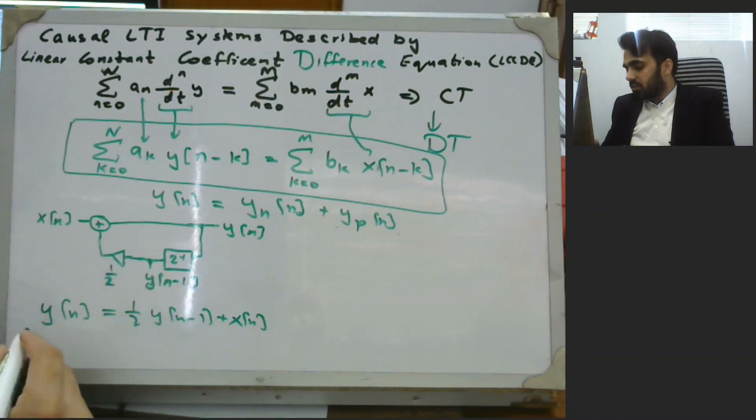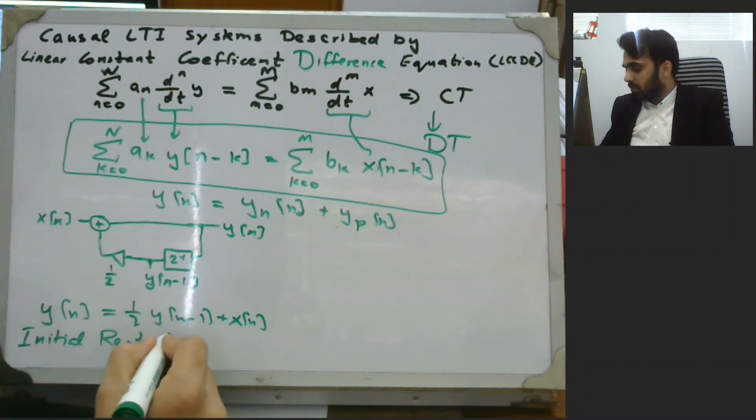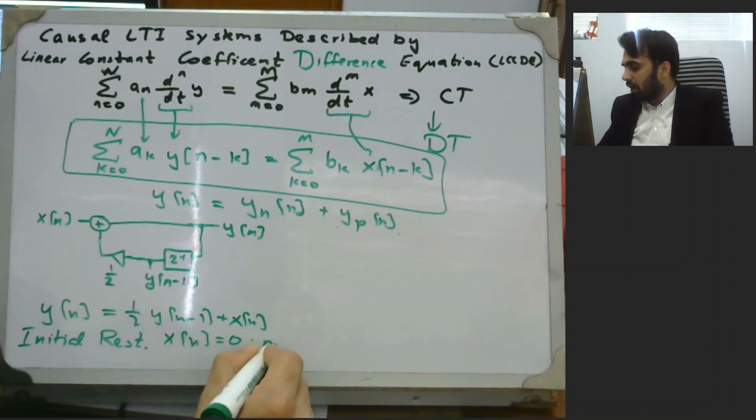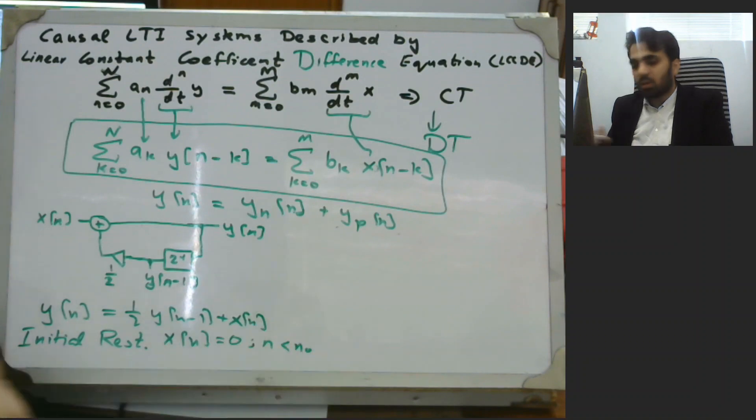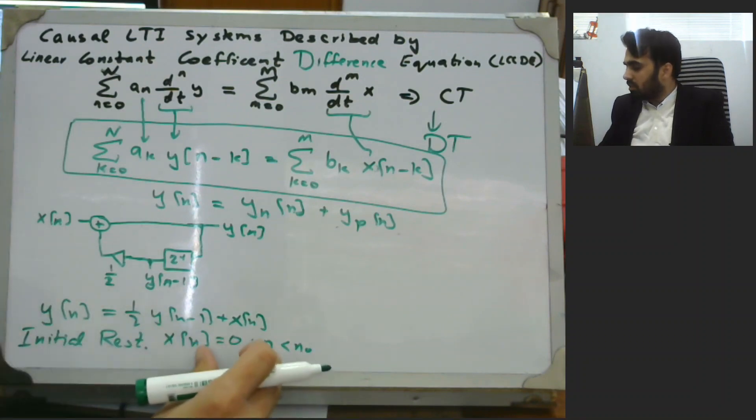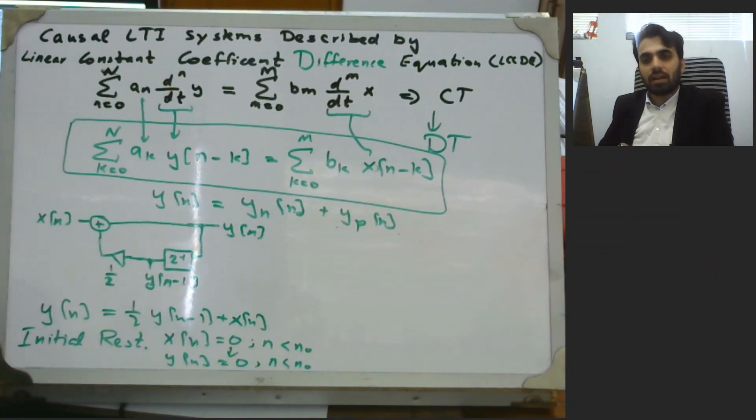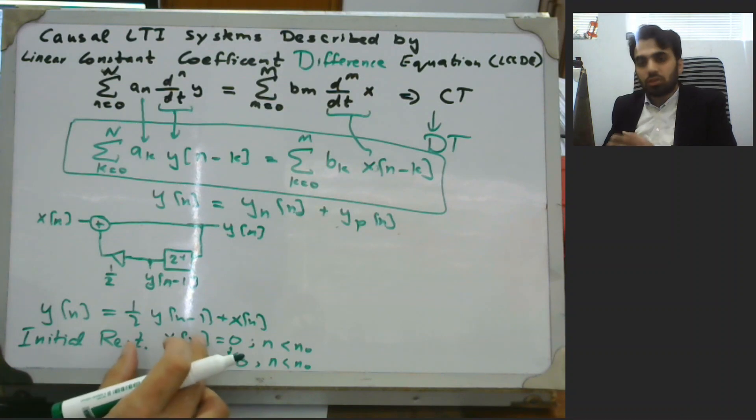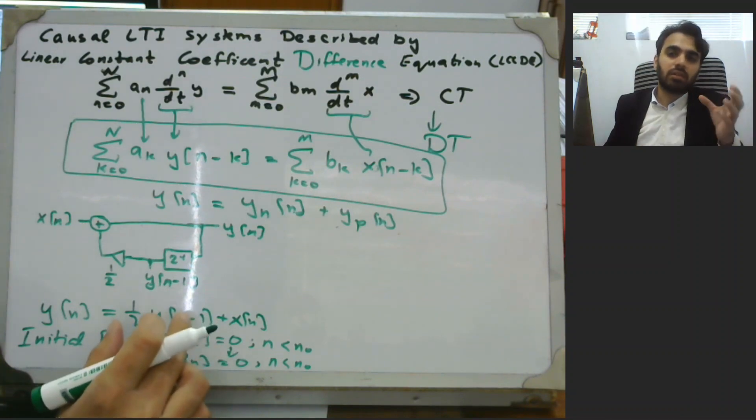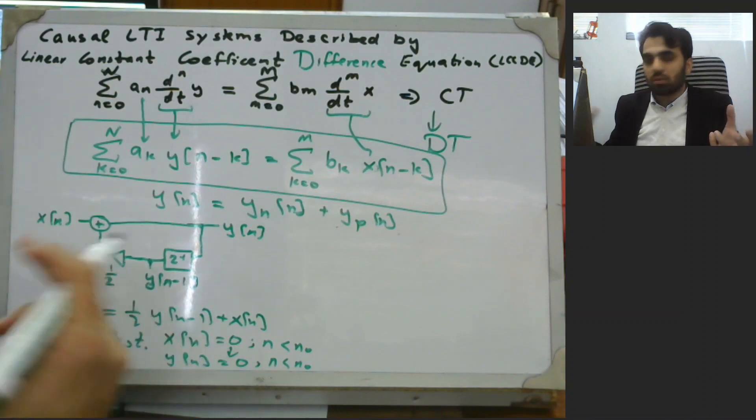We say that this system is at initial rest. This means that the value of input x of n is equal to 0 for n less than some specific value n_0. If this is true, this would mean that y of n is also 0 for that value of input n less than n_0. In short, at time instant 0 and prior to that, the input is 0, so the output would also be 0.